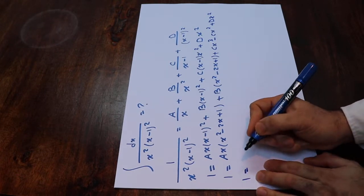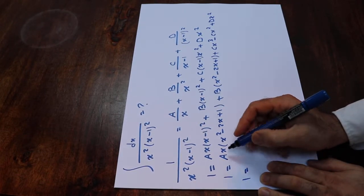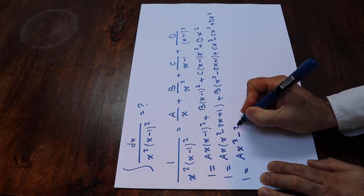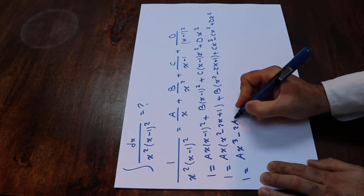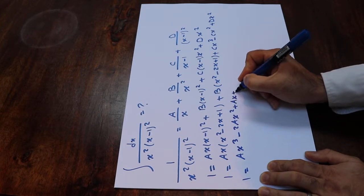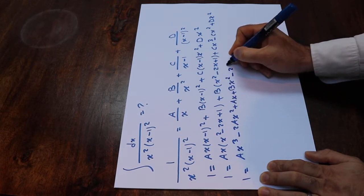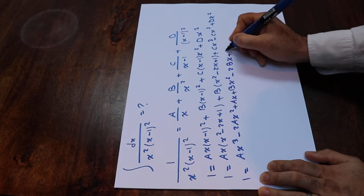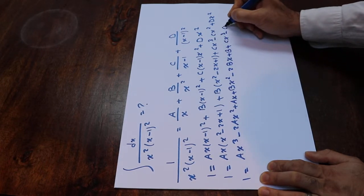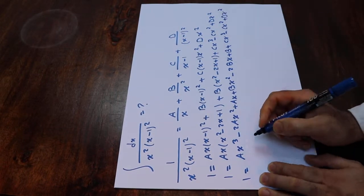Therefore 1 will be equal to Ax³ minus 2Ax² plus Ax plus Bx² minus 2Bx plus B plus Cx³ minus Cx² plus Dx².